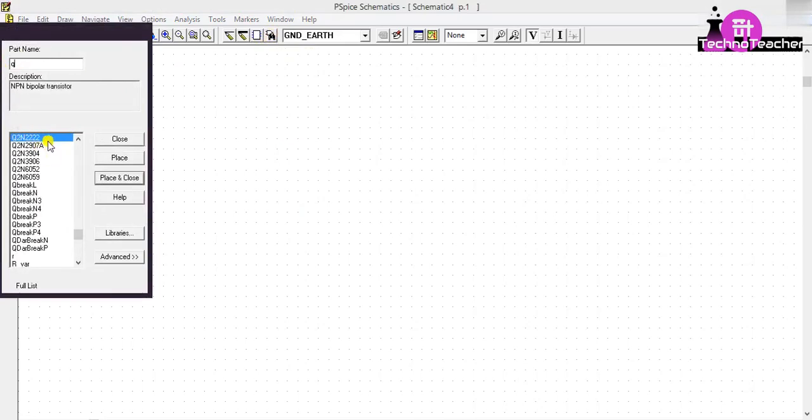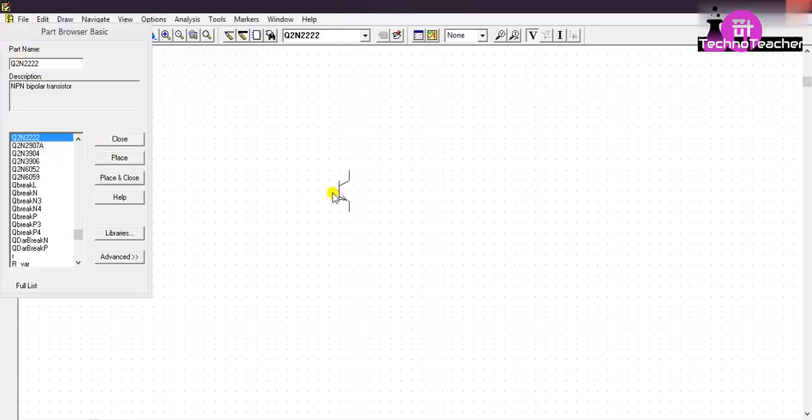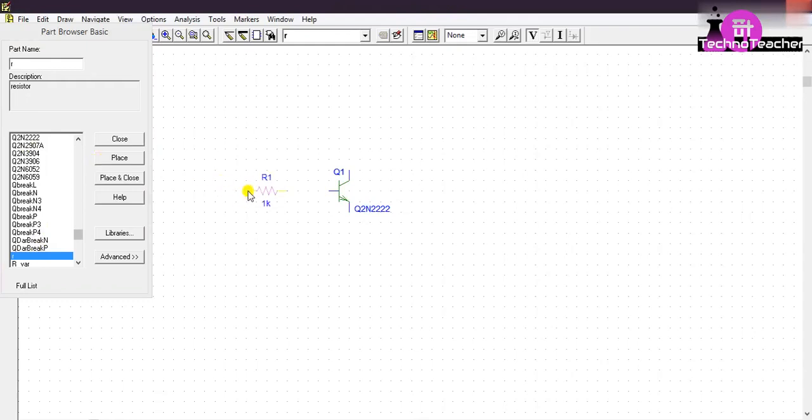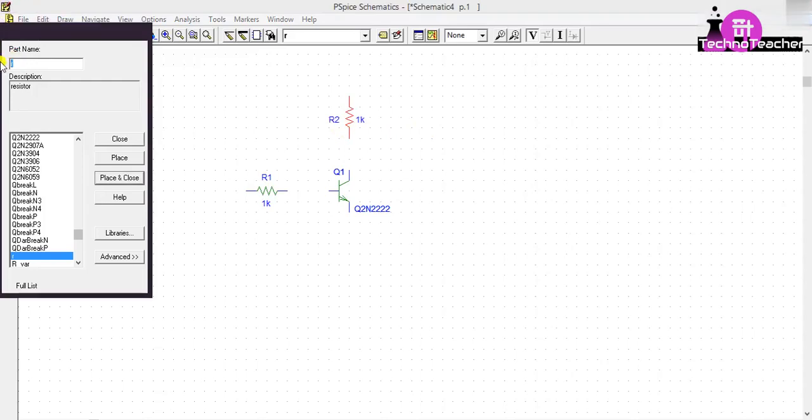Select this transistor, then place it here, then right click. Then we need two resistors. Click on R, then place it here. And to rotate this resistor press Ctrl+R, place it here and here, then right click. Then we need two voltage sources VDC.